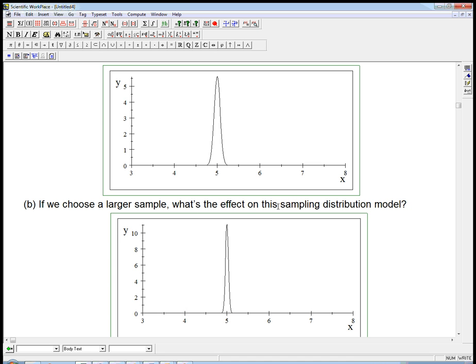Part B: if we choose a larger sample, what's the effect on the sampling distribution model? All that happens is it gets pointier and pointier, gets sharper, so that the histogram of this model gets concentrated nearer and nearer 5. Larger sample sizes, we expect closer and closer to the mean, less and less variability.